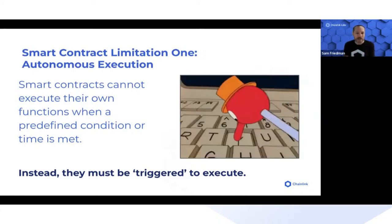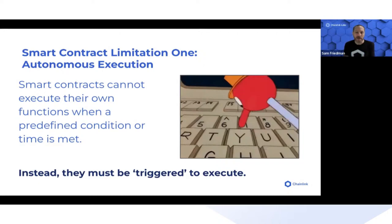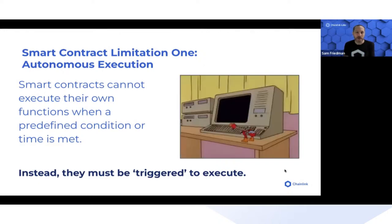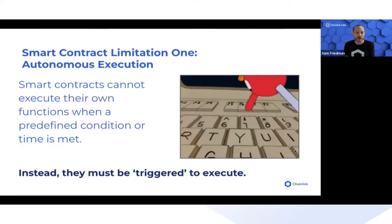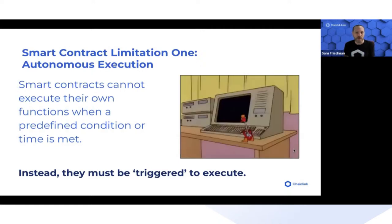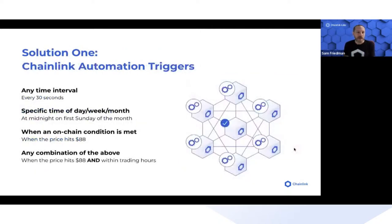Typically a user with a wallet or a system running an application needs to execute the smart contract. There's no sleep function or wait function in a smart contract. The way Chainlink Automation solves this is by providing a trigger mechanism for any arbitrary on-chain or off-chain condition.